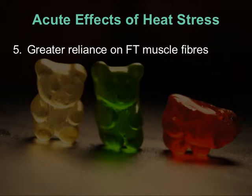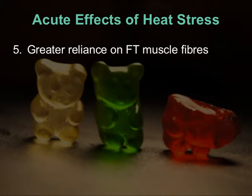Fast-twitch muscle fibers are the type 2 fibers — white muscle. They produce a lot of force and contract quickly, but they fatigue very easily. These fibers involve a large degree of anaerobic glycolysis, produce a lot of lactate, and use a lot of carbohydrate, which agrees with our understanding of what happens to the muscle in the heat.